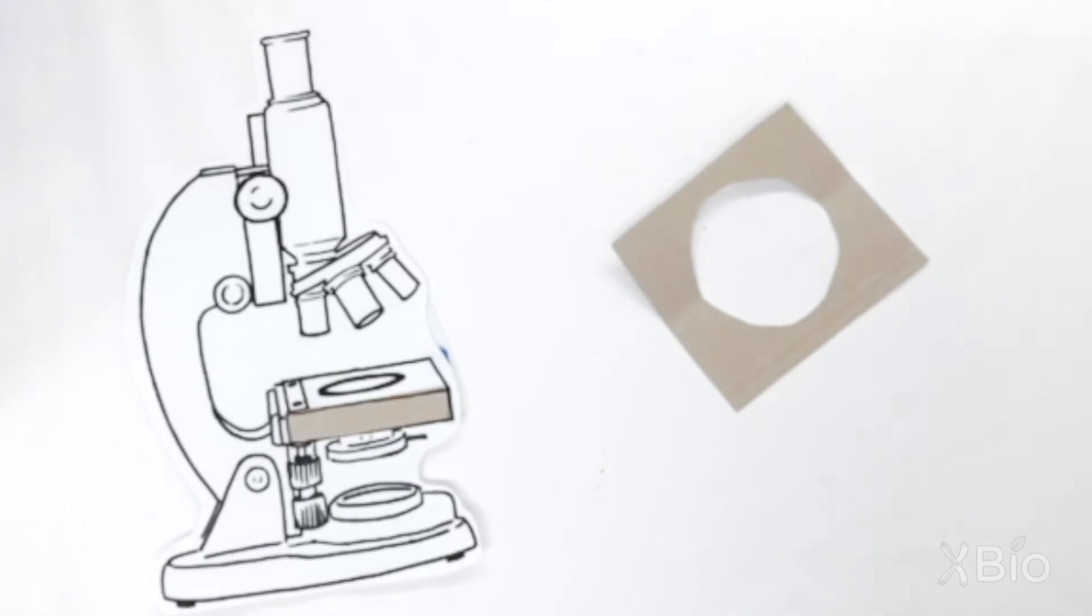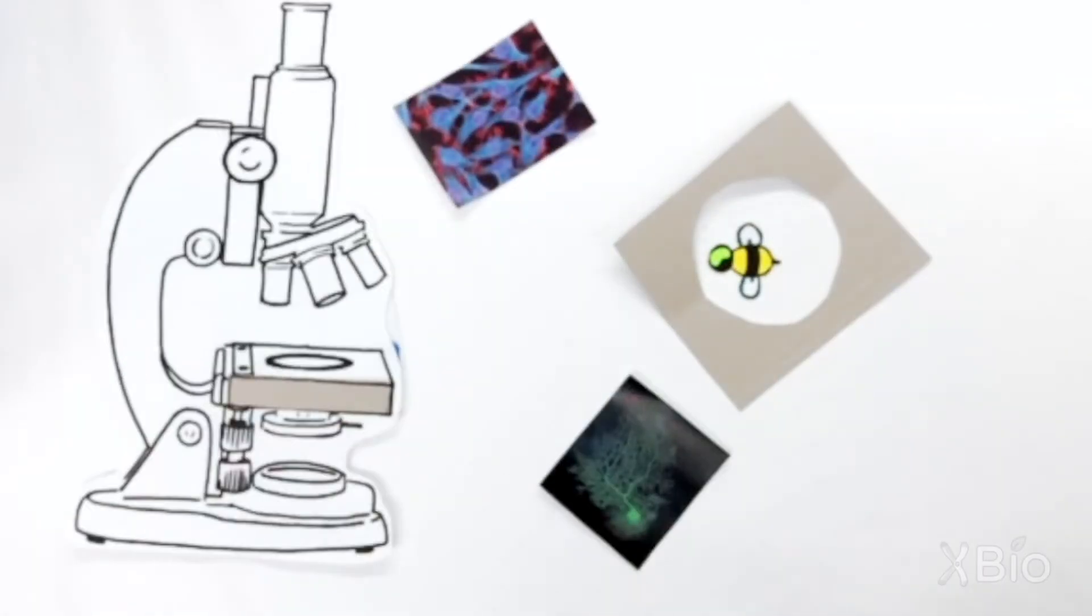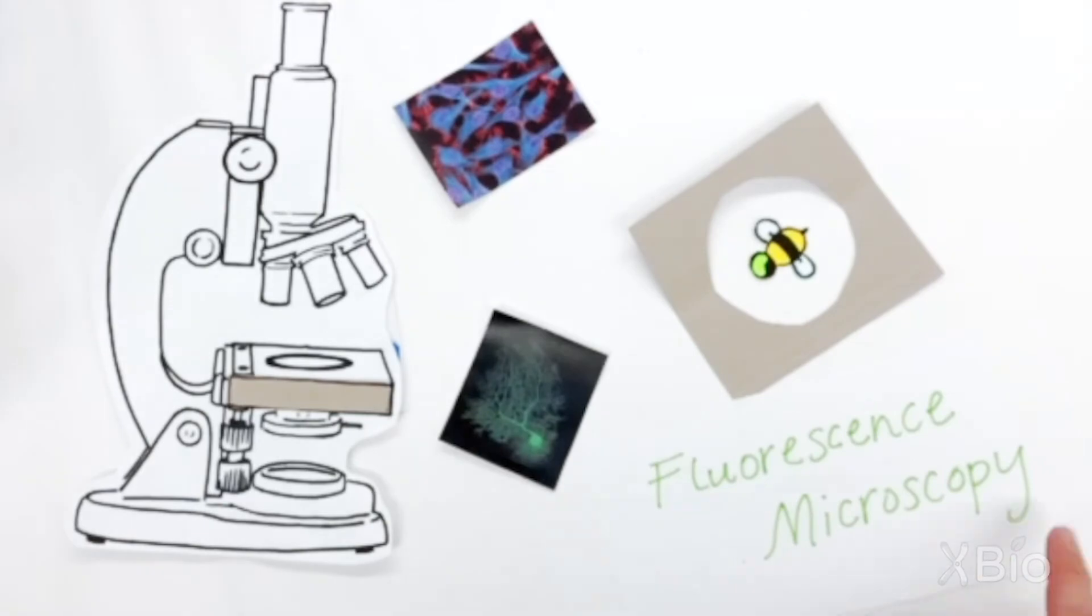By using multiple fluorescent proteins to color different parts of a sample, we can very clearly see whatever it is we might be looking for.